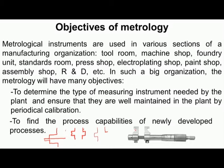Every instrument undergoes wear and tear due to continuous usage. At regular intervals, instruments need to be compared with accurate instrumentation in the standards room, and the amount of error should be recorded on the instrument. The quality control department also assesses the process capabilities of newly developed processes — whether they perform as expected or need changes to increase process capability.